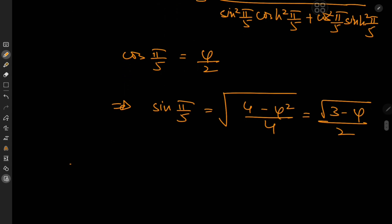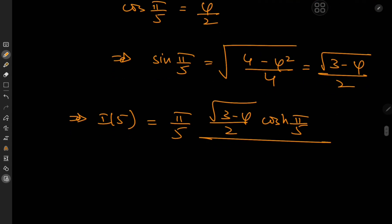And plugging in this result, we have i of 5 equal to pi by 5 times root 3 minus phi divided by 2 times the cosh of pi by 5. So over here we have the square, so that's going to be 3 minus phi by 4 times cosh square pi by 5. And then we have a plus sign here. We have phi squared by 4 times sinh square pi by 5.